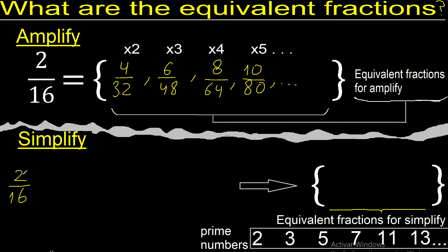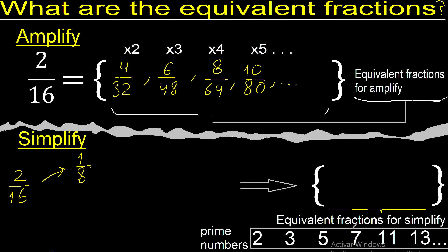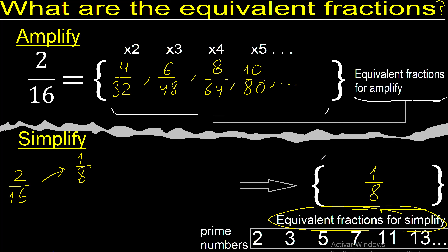Now, 2 and 16 can be divided by 2. 2 divided by 2 is 1. 16 divided by 2 is 8. 2 and 16 cannot be divided by another number, and 1 and 8 cannot be divided by the same number. Therefore, 1 and 8 cannot be further simplified.